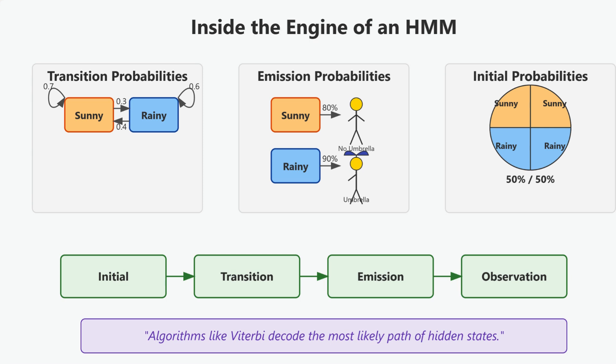So in short, hidden Markov models are a smart way of making sense of uncertain, hidden things, just by watching what we can see over time.